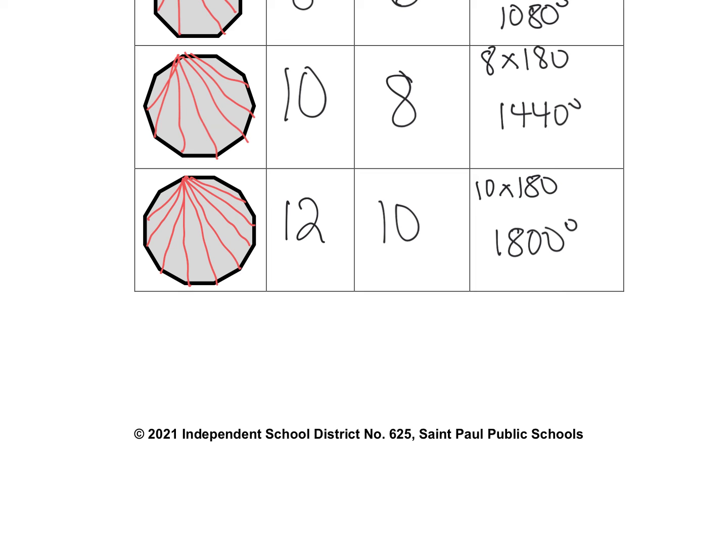Now, as we've seen that pattern as we're going through of making triangles, hopefully you start to make a generalization of what it looks like when we have an n-sided figure. So n-sided means any-sided figure. So it could be a 20-sided figure, a 30-sided figure, whatever it is. We're seeing a pattern.